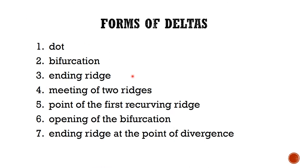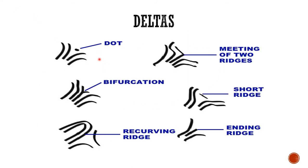Now we move on to deltas. Fingerprint deltas are only present in loops and whorls. There are various forms of deltas: the dot, the bifurcation, the ending ridge, the meeting of two ridges, the point of the first recurving ridge, the opening of the bifurcation, and the ending ridge at the point of divergence. Examples include the dot, the bifurcation — called so because it bifurcates — the recurving ridge, the meeting of two ridges, the short ridge, and the ending ridge.